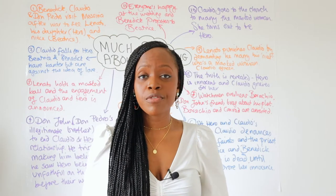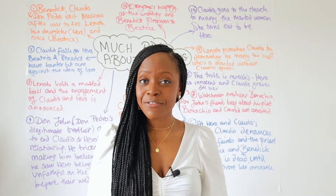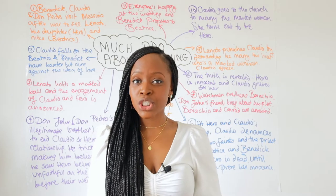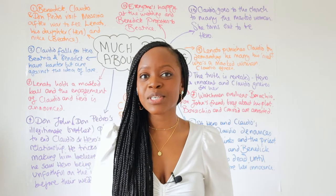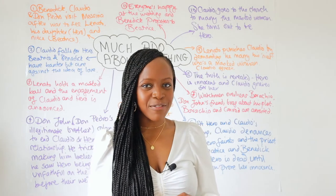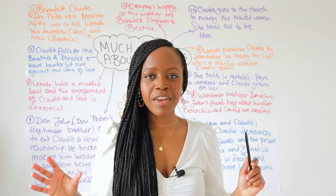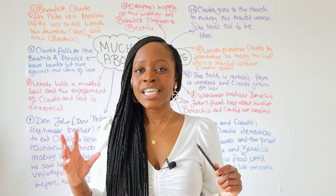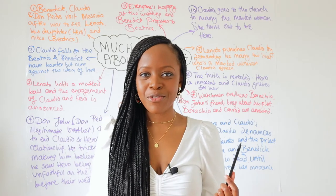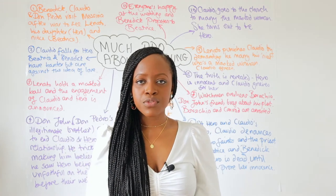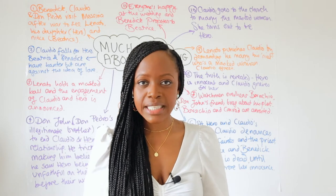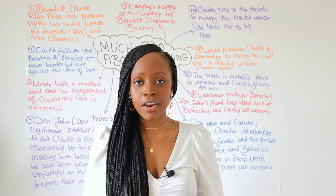The play Much Ado About Nothing is one of Shakespeare's most famous comedies. There's lots of trickery, deception and plots as well as schemes that take place, and it can be a little bit confusing to follow all the different characters and of course to know the difference between Don John and Don Pedro. So what I thought would be really useful is to summarise this play and the key events that happen in a nutshell.